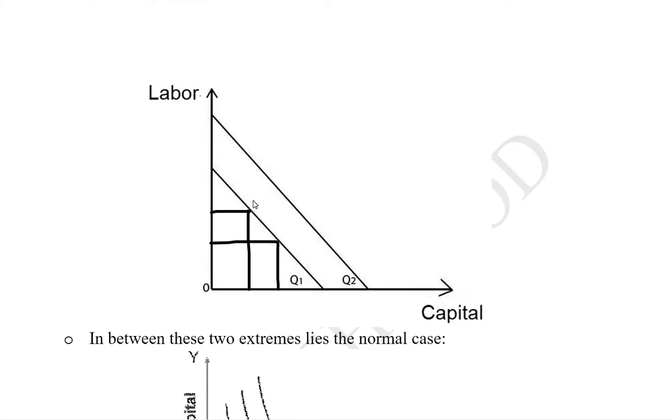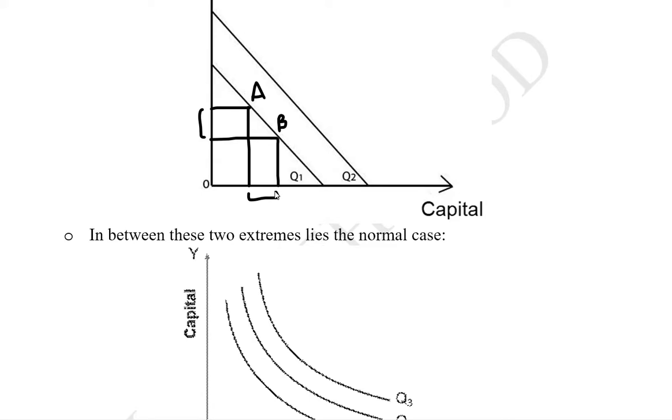If we move from point A for instance to point B, the change on capital axis is equal to the change on labor axis. There is perfect substitution ability between labor and capital in this set of indifference curves that have a straight line, and it is definitely negatively sloped. This was the other possibility which had unlimited substitution.